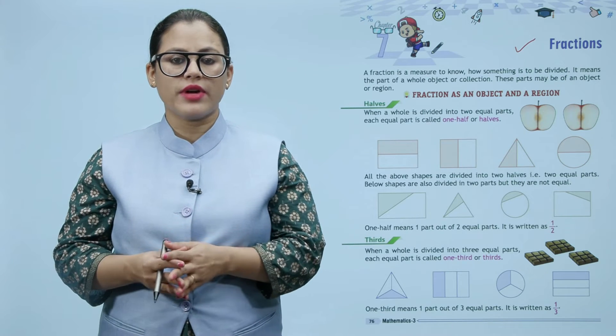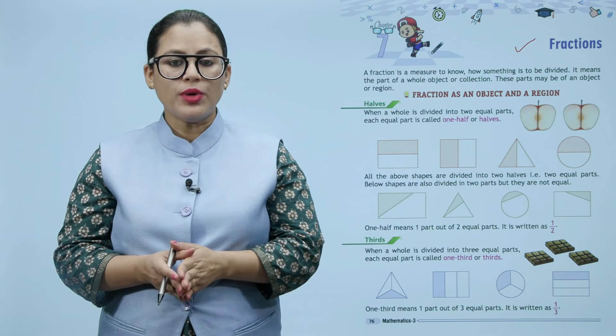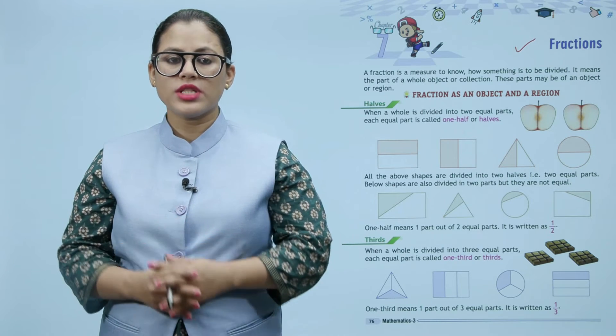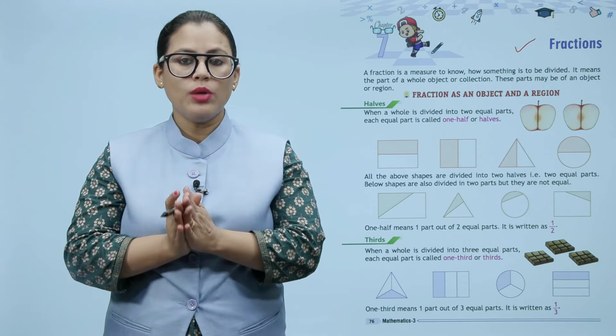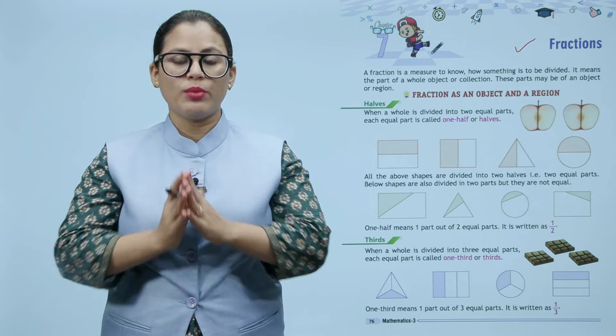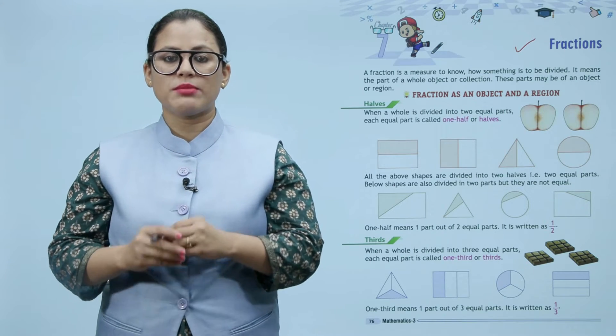The shapes below are also divided into two parts, but they are not equal. When we have a whole part divided into two, we call it half.